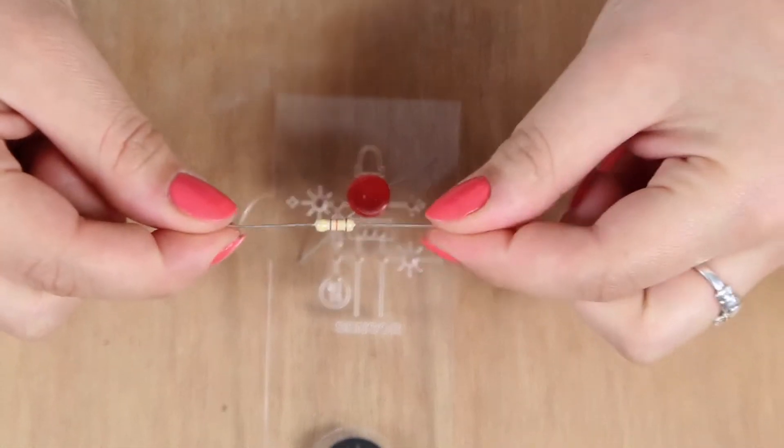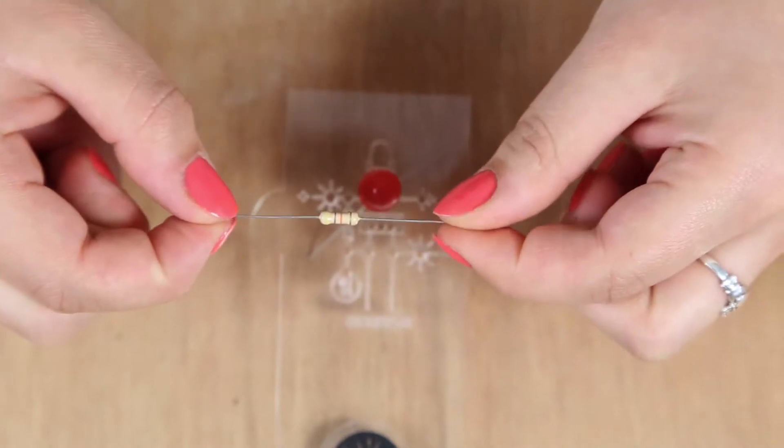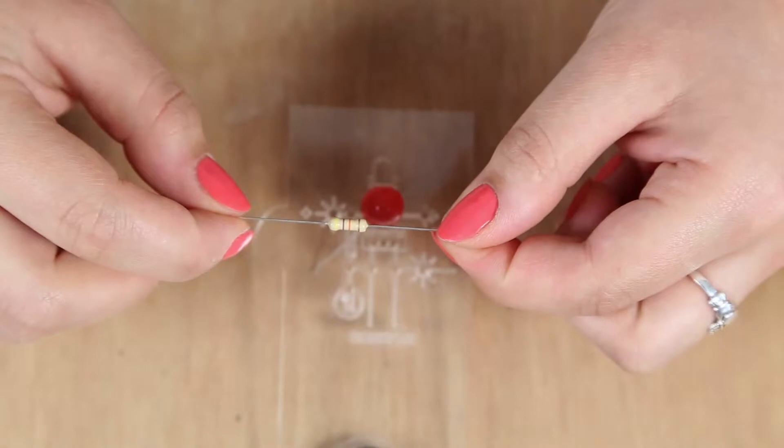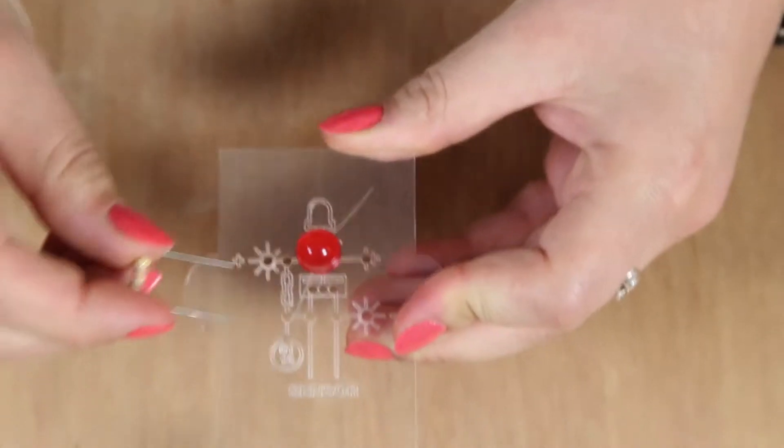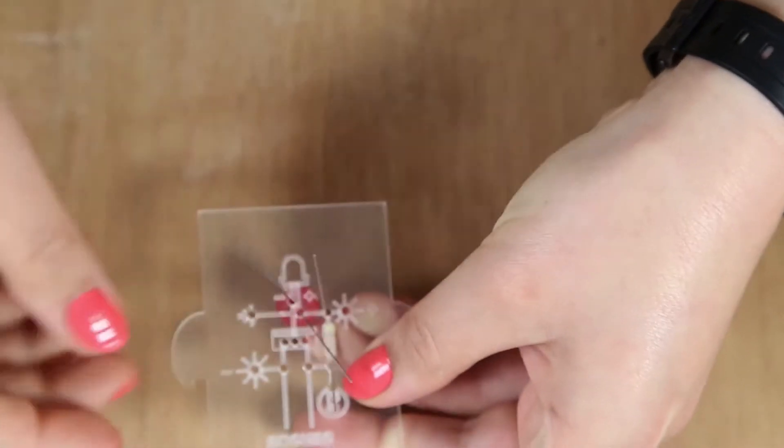So the second component we want to put in is called a resistor. We can tell the value of the resistor from the stripes of color which are on it. So this one has yellow, violet, orange and gold. So that means 47 kilo ohms. So we want to put it in the front like this and then bend the legs to keep the component in place.